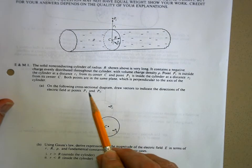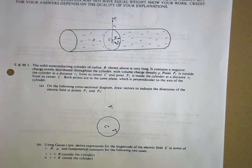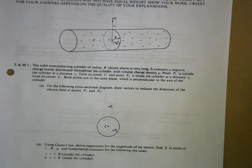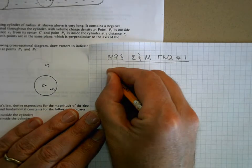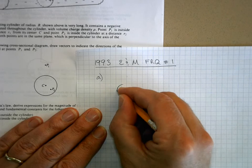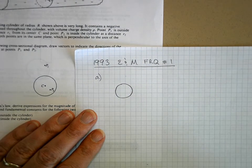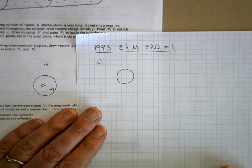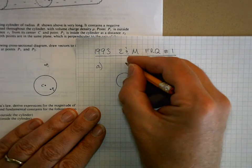So on the following cross-sectional diagram, draw vectors to indicate the direction of the electric field at points P1 and P2. So let me redraw that. Obviously, when you take the test, you won't have to take the time to redraw it.